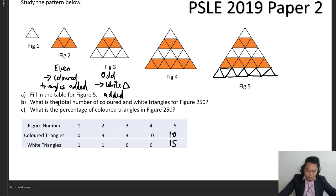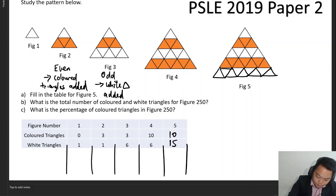For part B, what is the total number of colored and white triangles for figure 250? To deal with this, it helps to extend out the table a little. If this is your total over here, you can see that your total number of triangles will be one in figure one, four in figure two, nine in figure three, sixteen, and twenty-five, and so on.